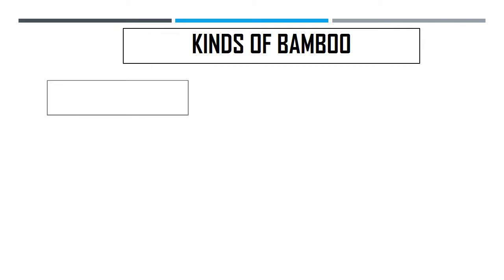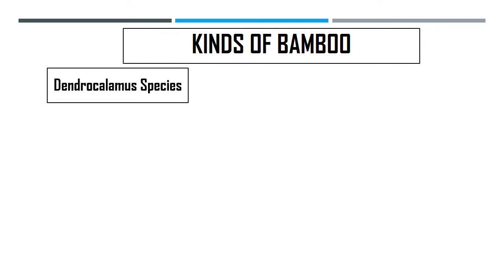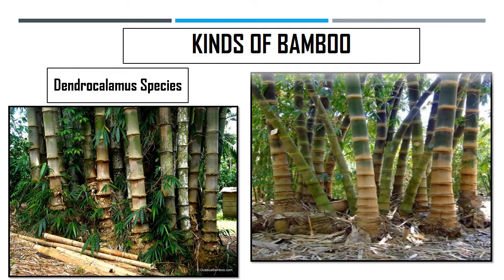Another kind of bamboo is Dendrocalamus species. It is used for construction purposes, vehicle shafts, and ropes. As you can see, the internodes and nodes are quite closer together compared to other kinds of bamboo. That is why it is a very hard kind of bamboo, and it is good for vehicle shafts and ropes.